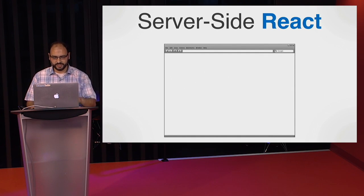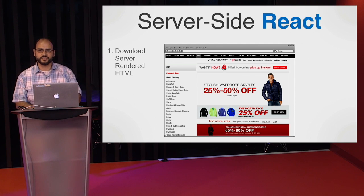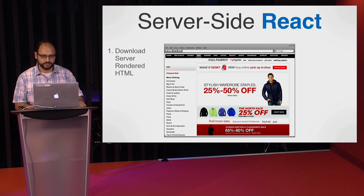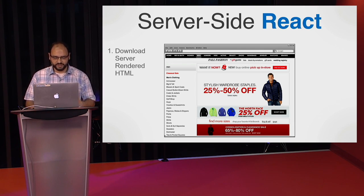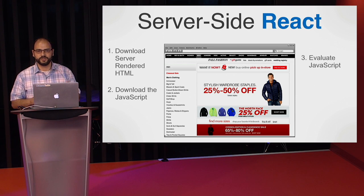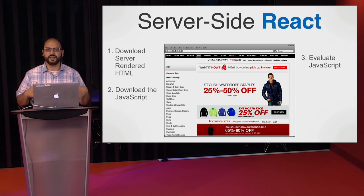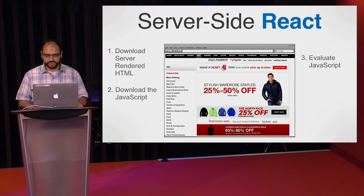What that looks like is you download that server-rendered HTML and the user already sees something right away. The browser's already beginning to paint on the screen what the user can start seeing — they can look for the Buy button and start reading about the products. In the background, you're downloading and validating the JavaScript, so now your page becomes fully functional. This increases the perceived performance that the user will see.